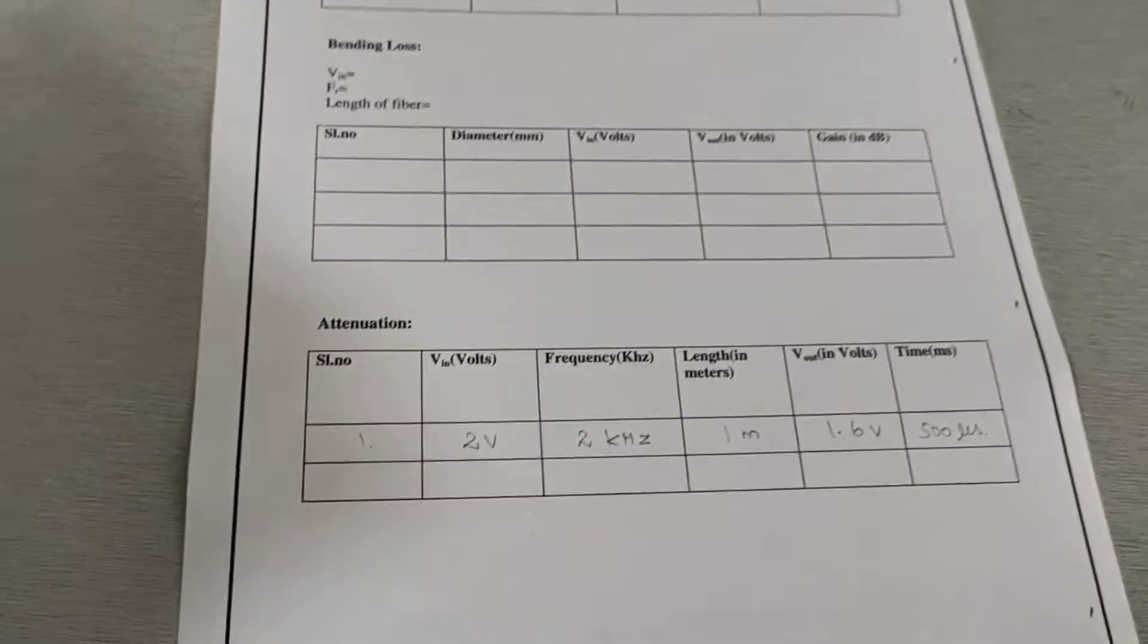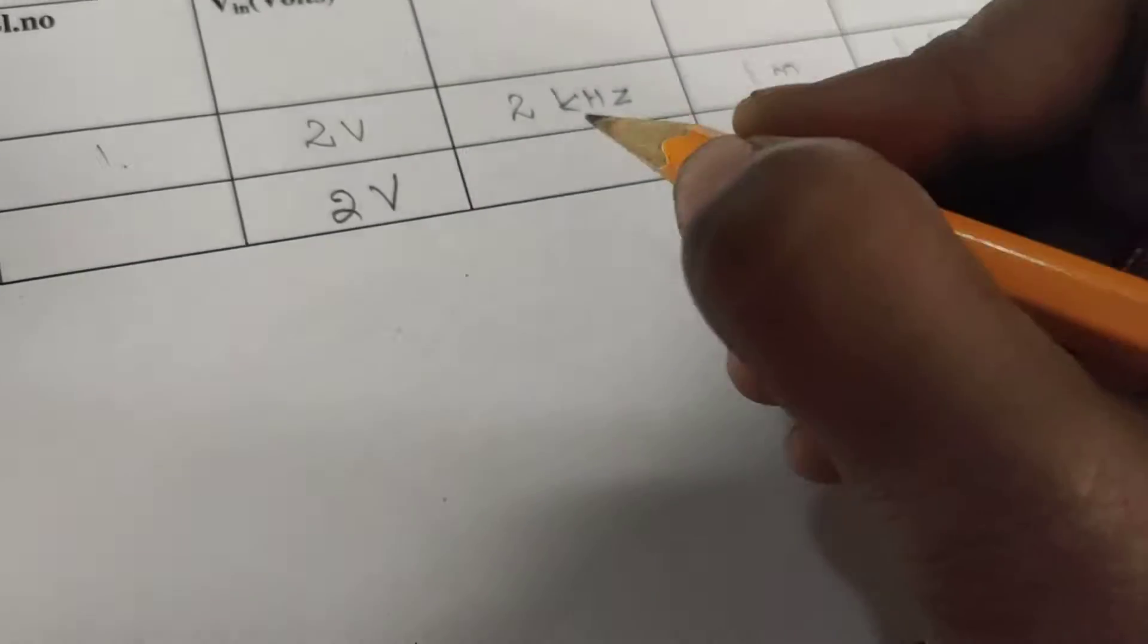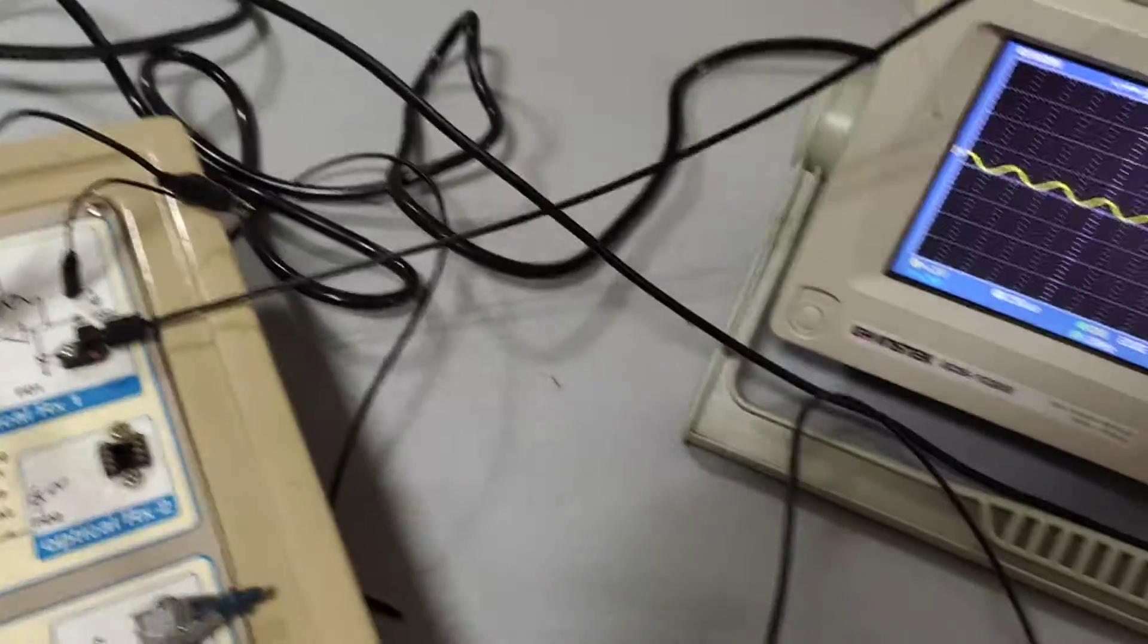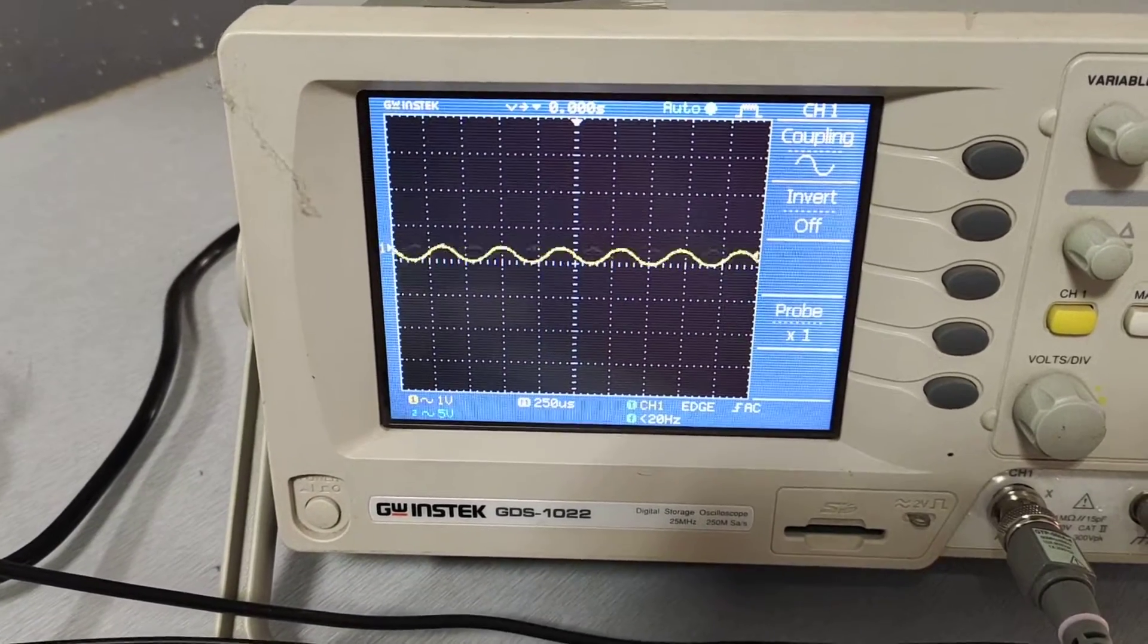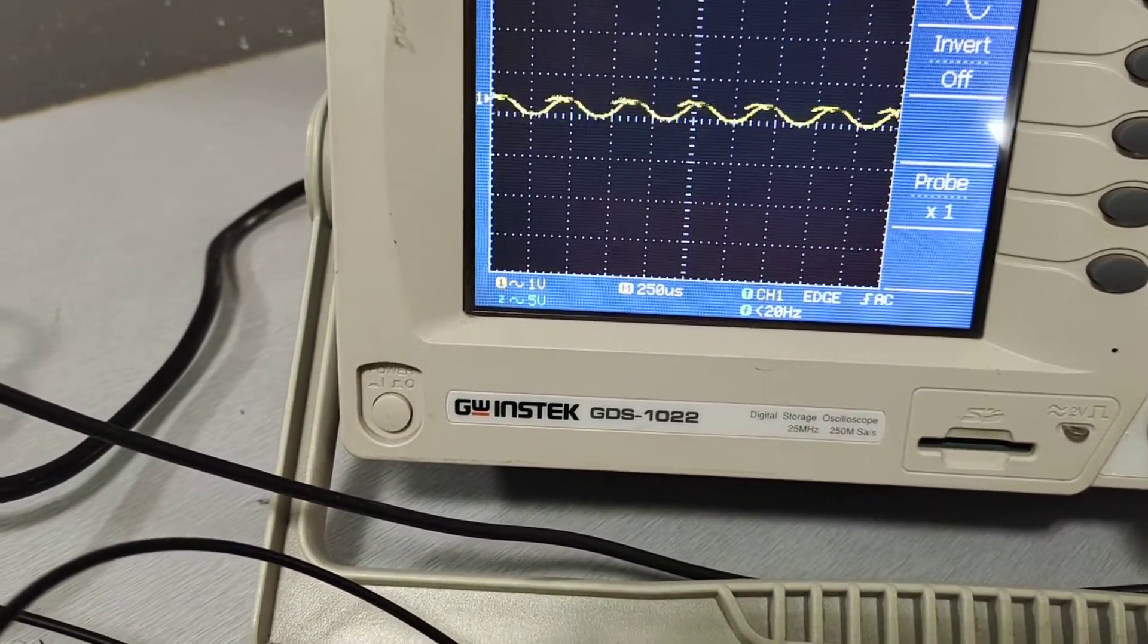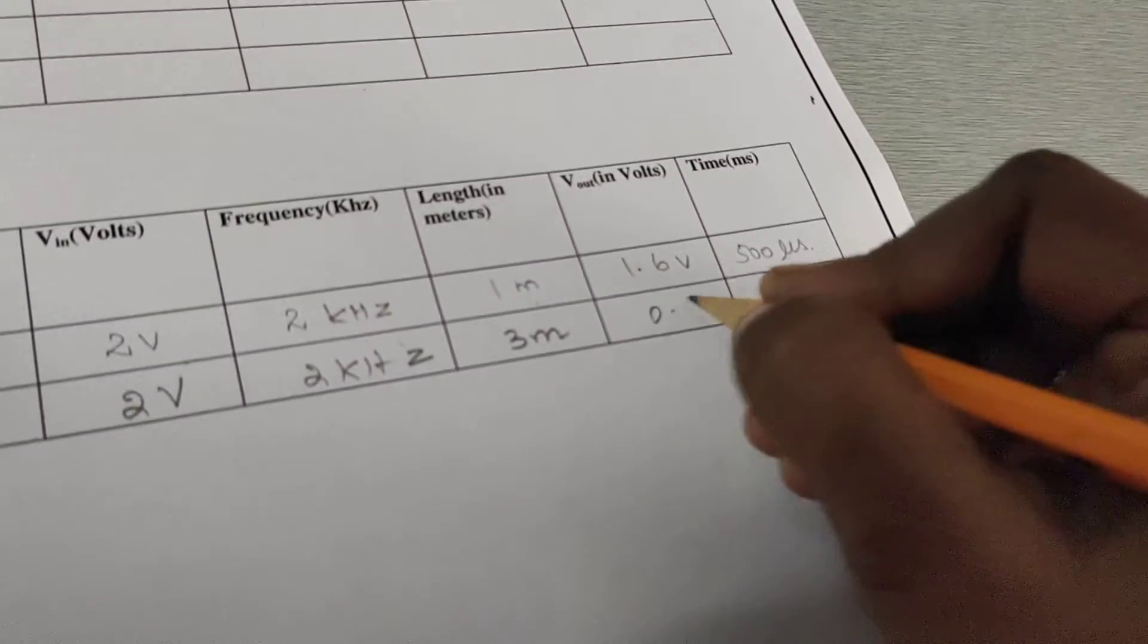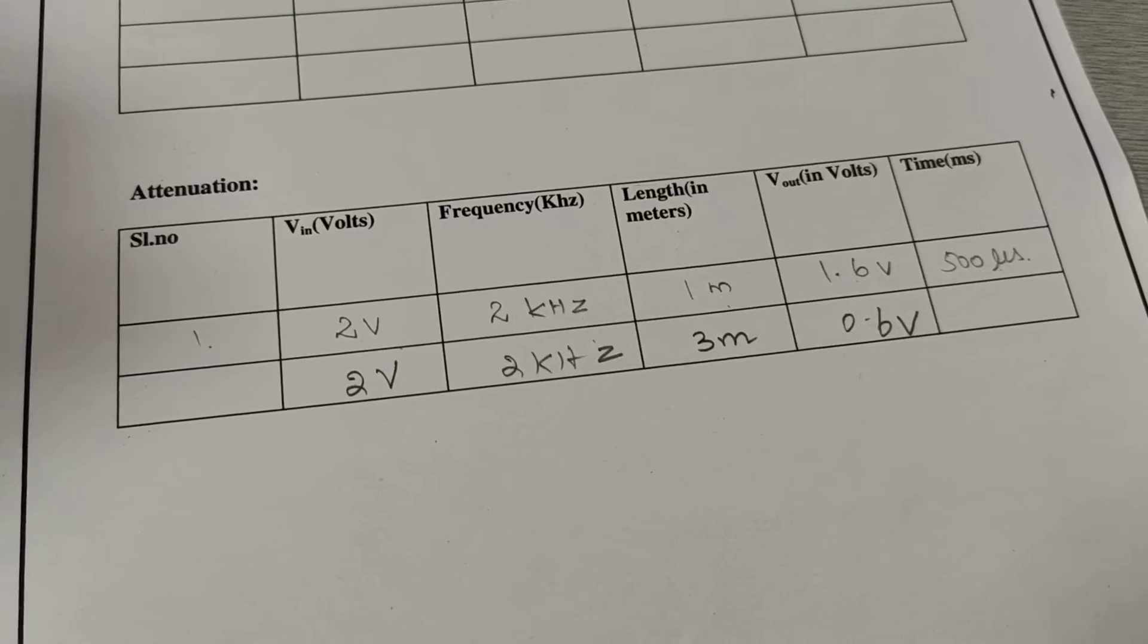Similarly we are going to connect the 3 meter cable. The same input 2 volt is given, the frequency is 2 kilohertz, we are going to measure V out. Now you can observe there is some signal reduction in the output side, in the receiver side it is approximately 0.6 volt output.